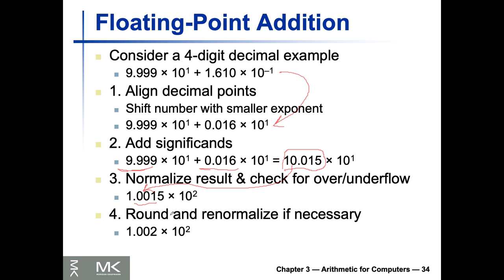After shifting, we have 9.999 times 10 to the 1, plus 0.016 times 10 to the 1. Now on the second step, we add the significands. The result is then normalized — only one leading digit — so it becomes 1.015 times 10 to the 2. Depending on the digit allowance — in this case only 4 digits — we can't represent 5 digits, so we have to round it. This rounding is the root of many issues when working with floating-point numbers. If a computer only accepts 4 digits and you perform millions of operations, at the end your results could be far off compared to a computer accepting 5 digits, because you're repeatedly rounding.